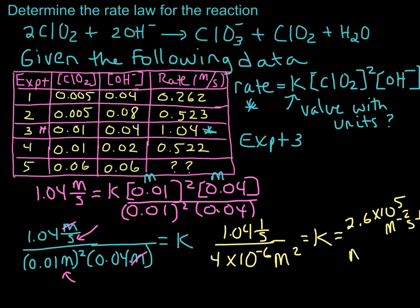So, let me just rewrite that right here. Molar to the minus 2 seconds to the minus 1. Now, you could also write your units as 1 over molar squared seconds. So, either one is fine, and those are the units for the rate constant for a third order reaction overall.